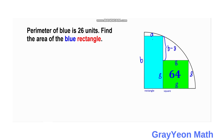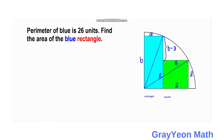This distance will be A, and this distance will be A plus 8. Next, we draw two lines that will define the radius of this semicircle — one to the corner of the blue rectangle and another to the corner of the square. So this distance will be r, or A plus 8.